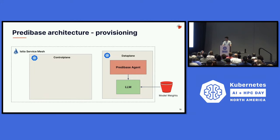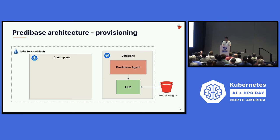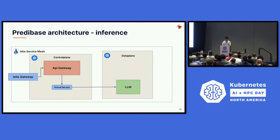Once the Predibase agent gets the request to provision an LLM, it will create the deployment and the weights for that model will be downloaded from that data plane's model store — the blob storage is also in that customer's account or VPC. During LLM inference, the request comes in through the gateway, gets authenticated, and is routed to the LLM in the data plane via an Istio virtual service.